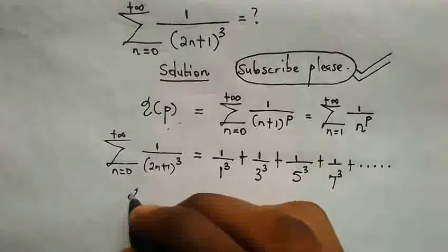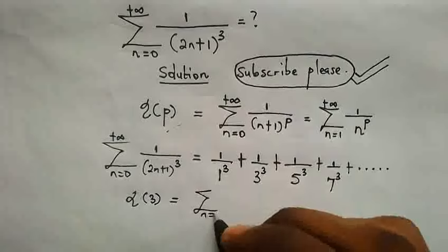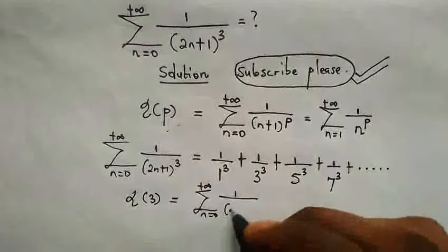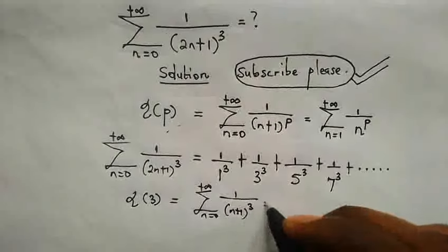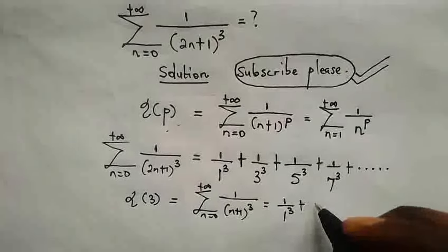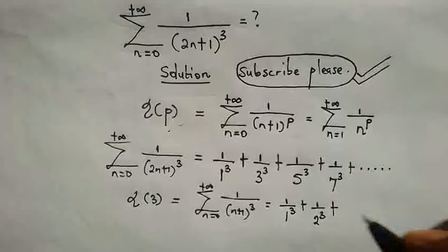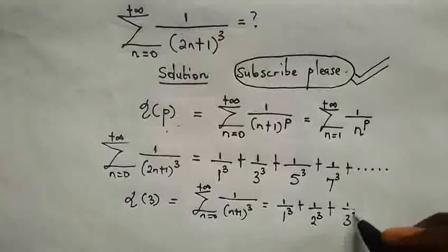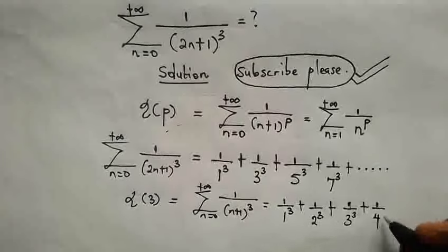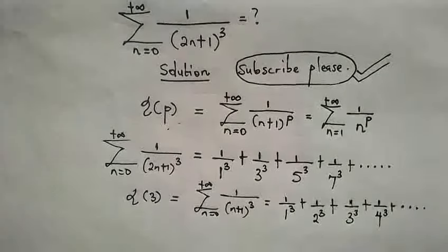Now the Riemann zeta(3) is equal to the sum as n goes from 0 to infinity of 1 over (n+1)^3, which equals 1 over 1³ plus 1 over 2³ plus 1 over 3³ plus 1 over 4³, and so on. We can see that these two series look similar.